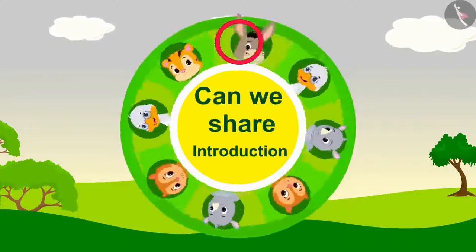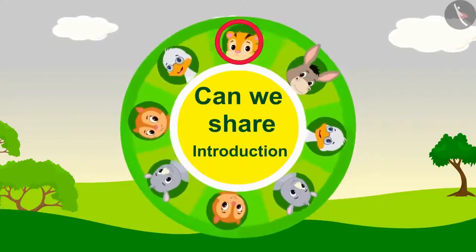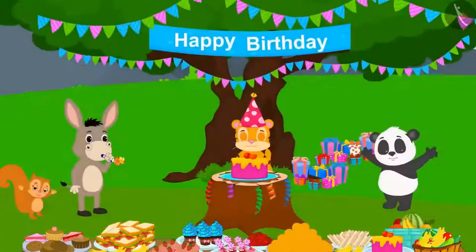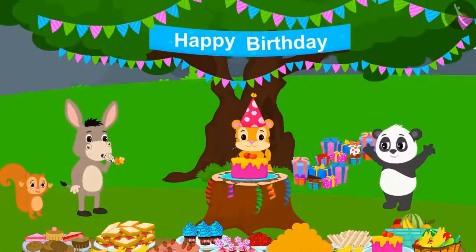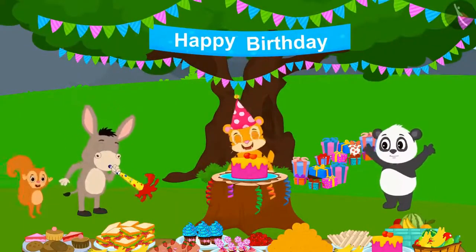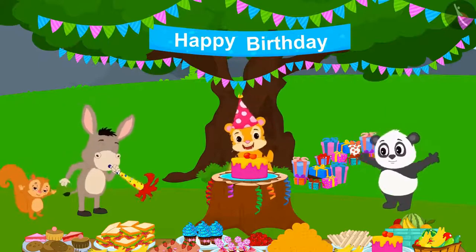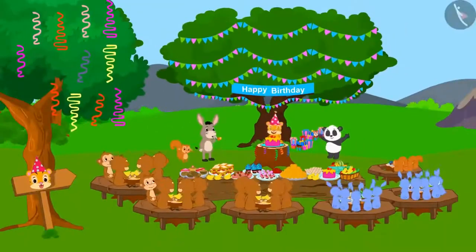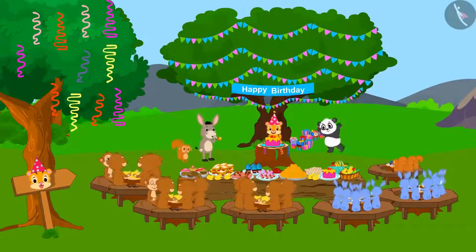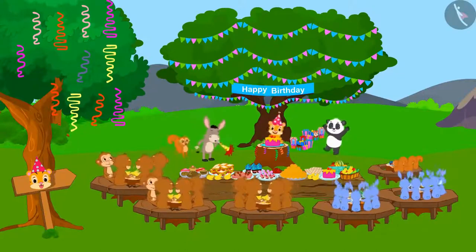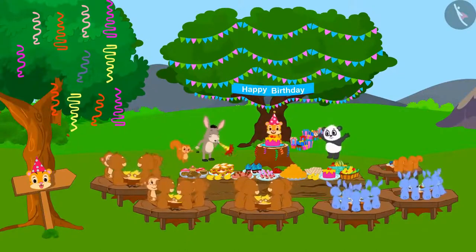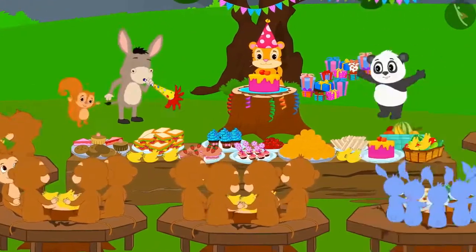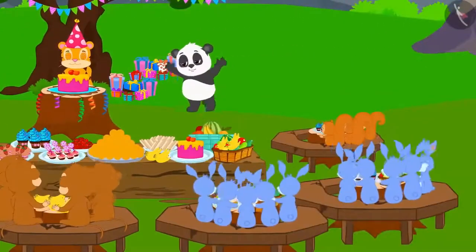Division — Equal Grouping. Today it is the king of the forest, Shere Khan's birthday. All the animals of the forest have been invited for the birthday celebrations. Different animals are sitting in groups.